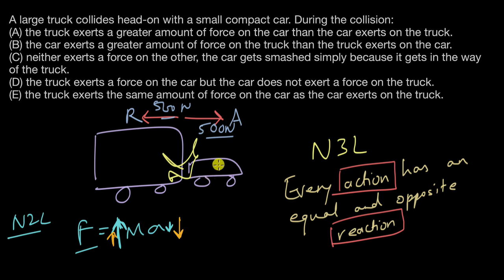Now if you look at the options, the first one says the truck exerts a greater amount of force on the car. Well, we might believe that, but it's not really what happens in reality—the forces exerted are the same, equal and opposite. So A is wrong. B is also wrong: the car exerts a greater amount of force on the truck—that's wrong.